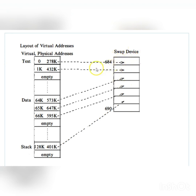In the swap device, no block is skipped. Text starts from address 0 and ends at 1K, taking 2K total. Data starts at 64K and the stack starts at 128K. So the swap device stores addresses 0, 1K, 64K, 65K, 66K, and 128K contiguously.